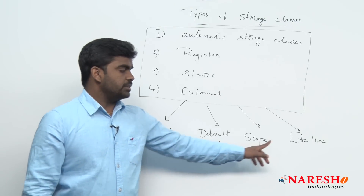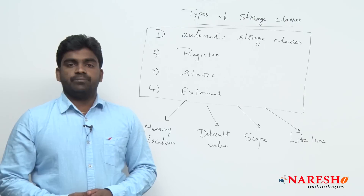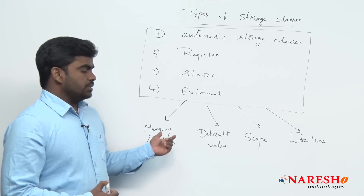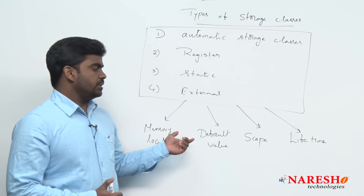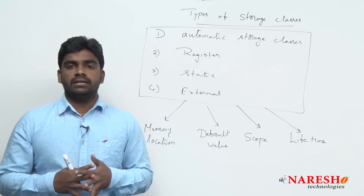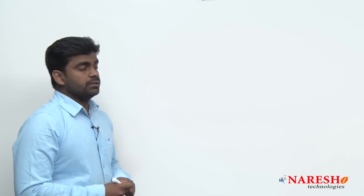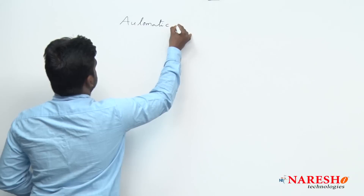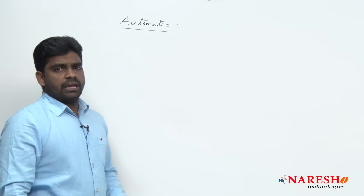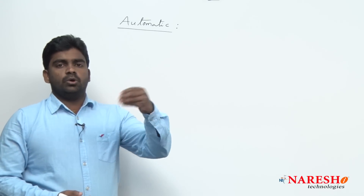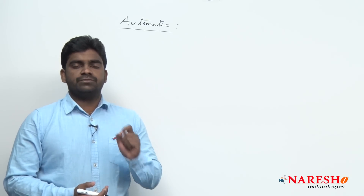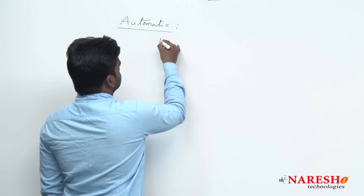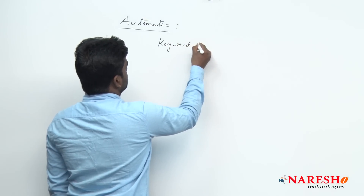We will see them one by one, starting with automatic storage class. What is the memory allocation? Where does it get memory allocation? What are the auto variable default values, scope, where we can access, and where we can declare? Automatic storage class means a local variable. If you are not specifying any storage class, by default it is an auto storage class. The keyword used is `auto`.